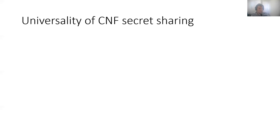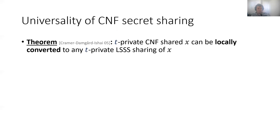Nevertheless, CNF secret sharing is useful for us due to its so-called universality. By a theorem of Cramer, Damgård, and Ishai from 2005, any T-private CNF sharing of X can be locally converted to a T-private sharing of X over any linear secret sharing scheme.